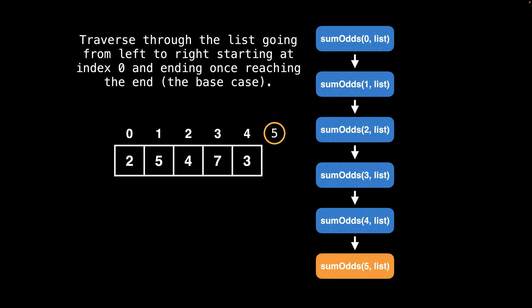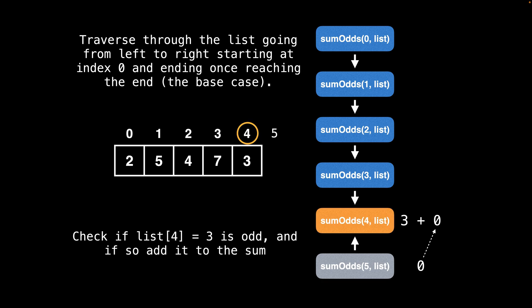Eventually we increment the index value to a position outside the bounds of the list, at which point we want to stop the recursion and unwind to calculate the sum. The function call for sum_odds with an index of five gets a sum of zero since there is no number at index five. Next we check if the number at index four is odd and if so add it to the total. Then we check if the number at index three is odd and if so add it to the total.